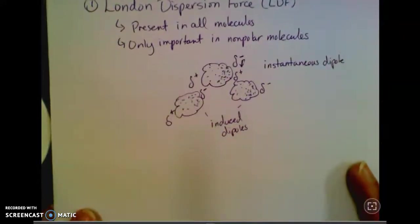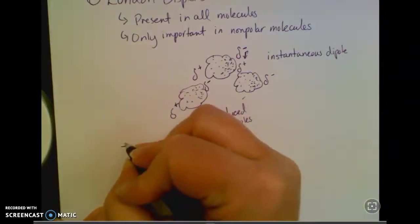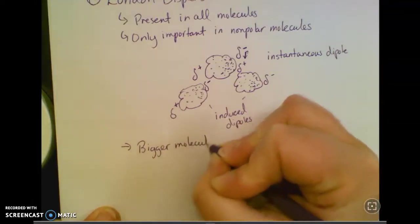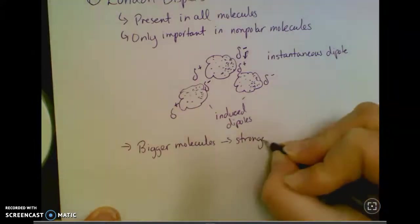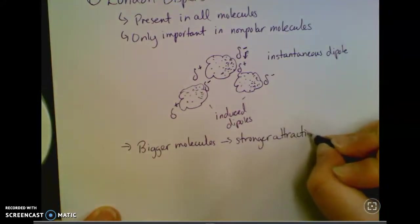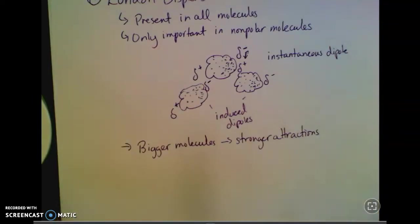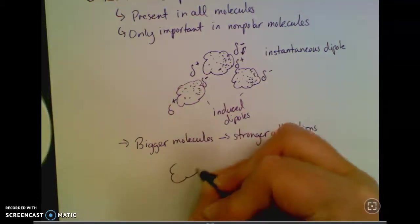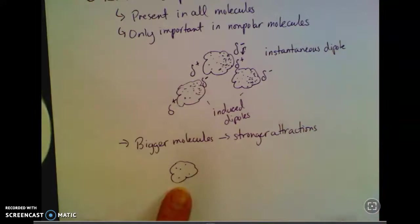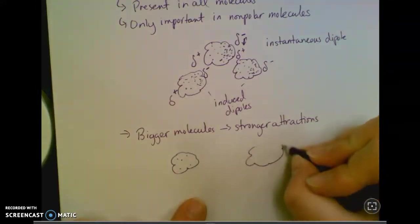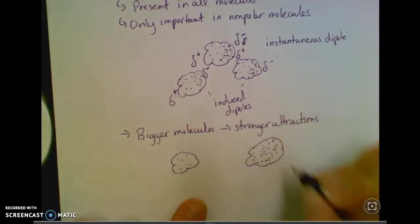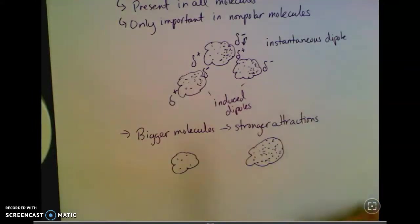Another thing to note is that bigger molecules will have stronger attractions. The reason for that is because if you've got more electrons, you have a bigger chance, a greater chance, of them getting bunched up. If I'm a molecule with very few electrons, there's not much bunching up. But if I'm a molecule with a lot of electrons, I have a much higher chance of having a traffic jam.